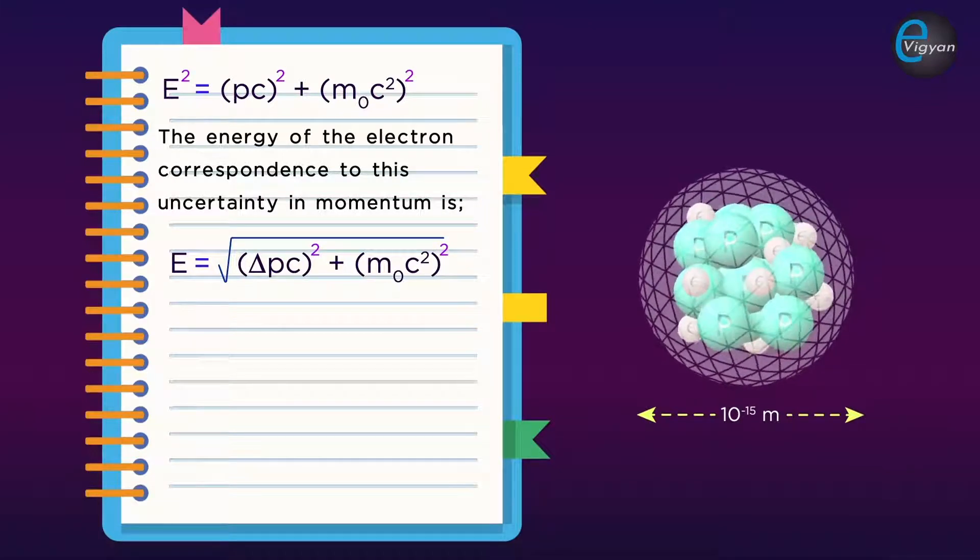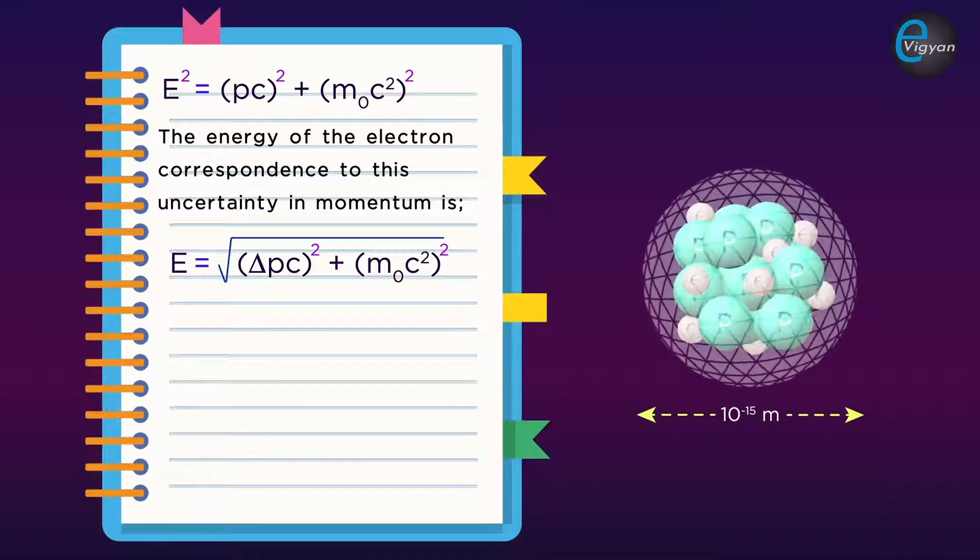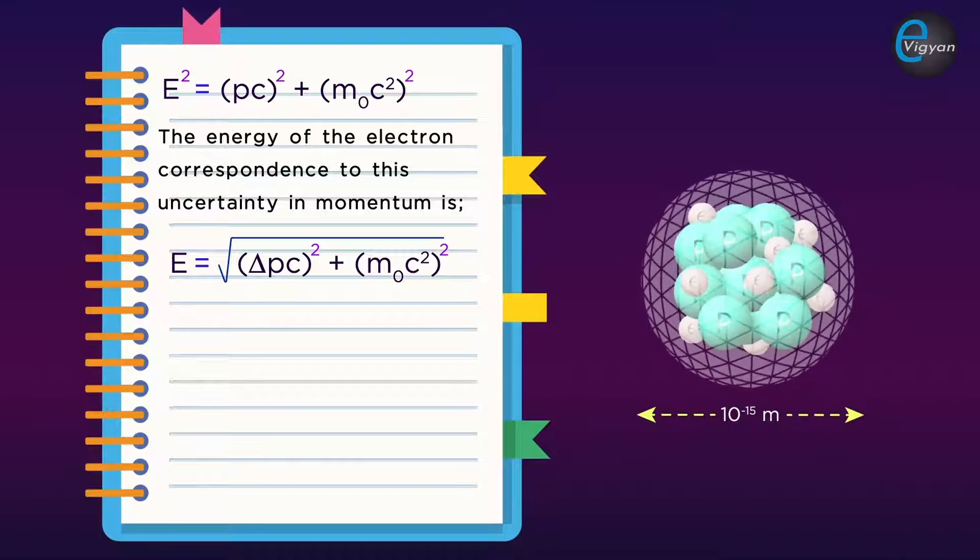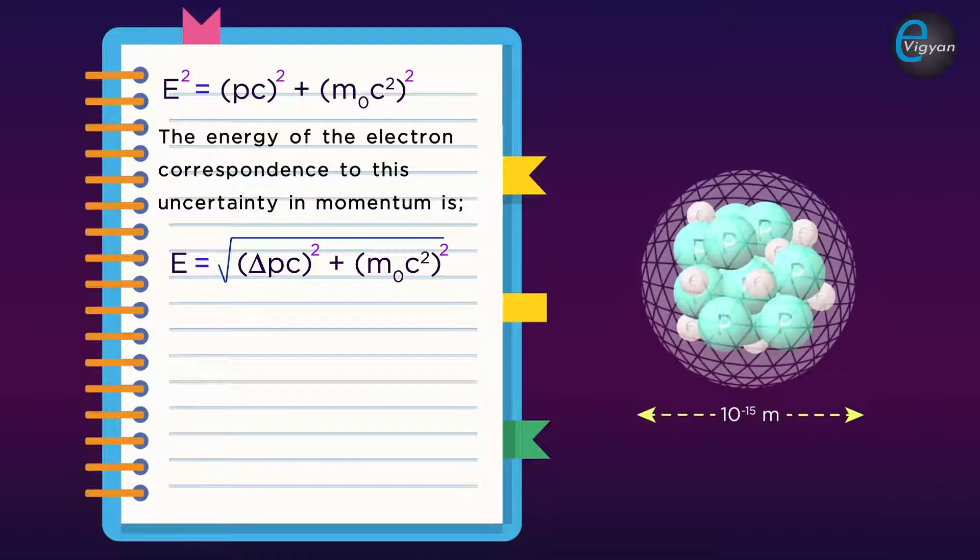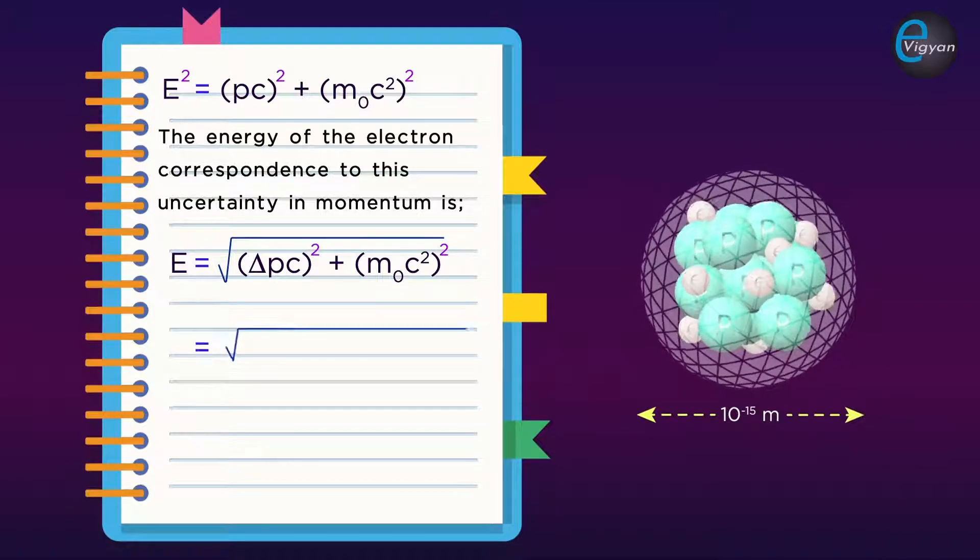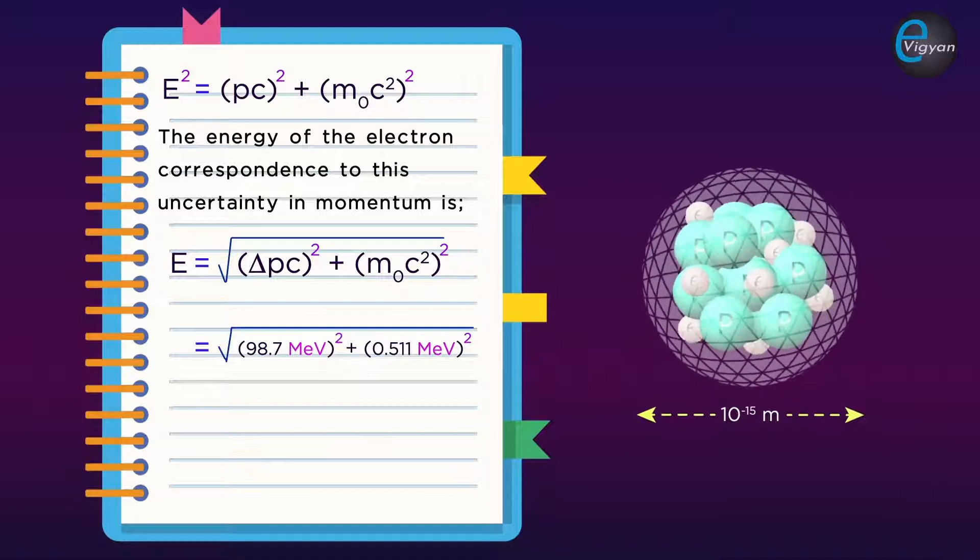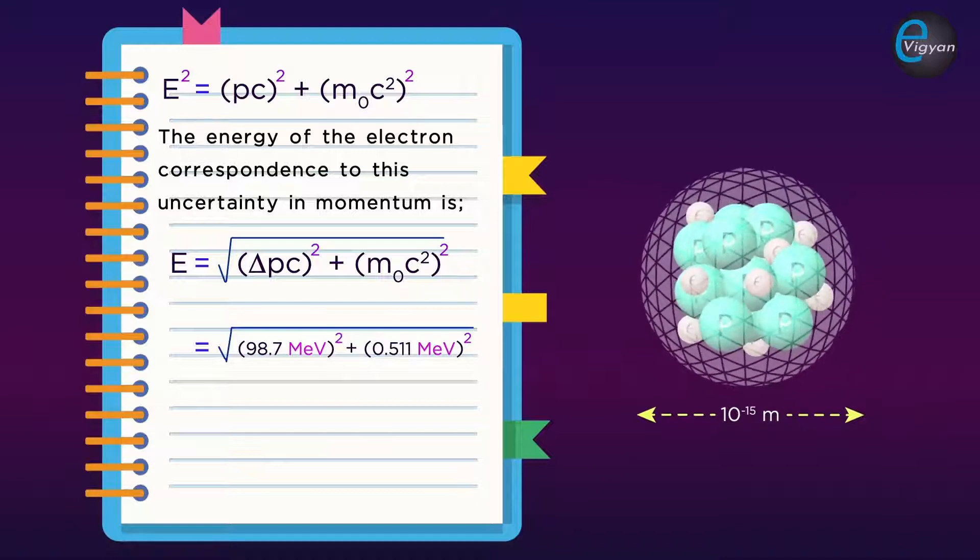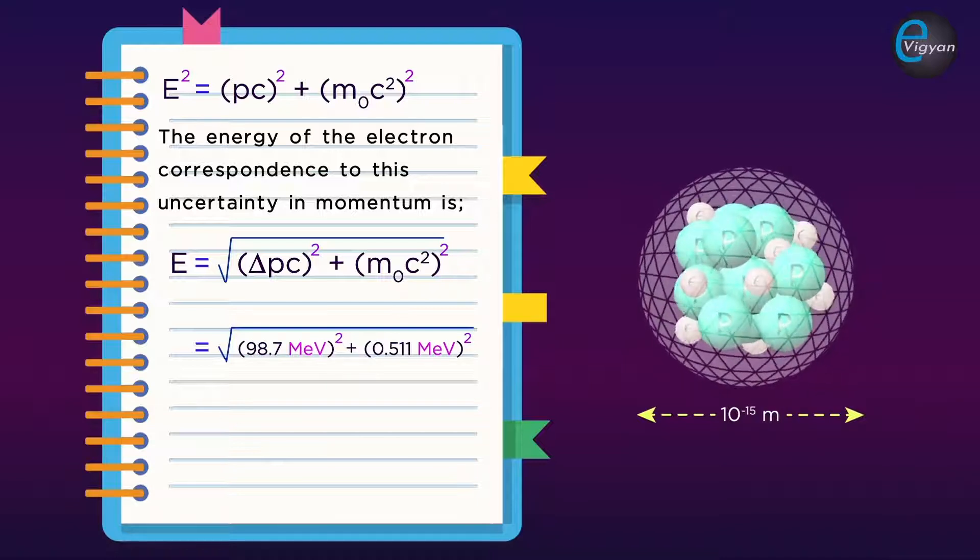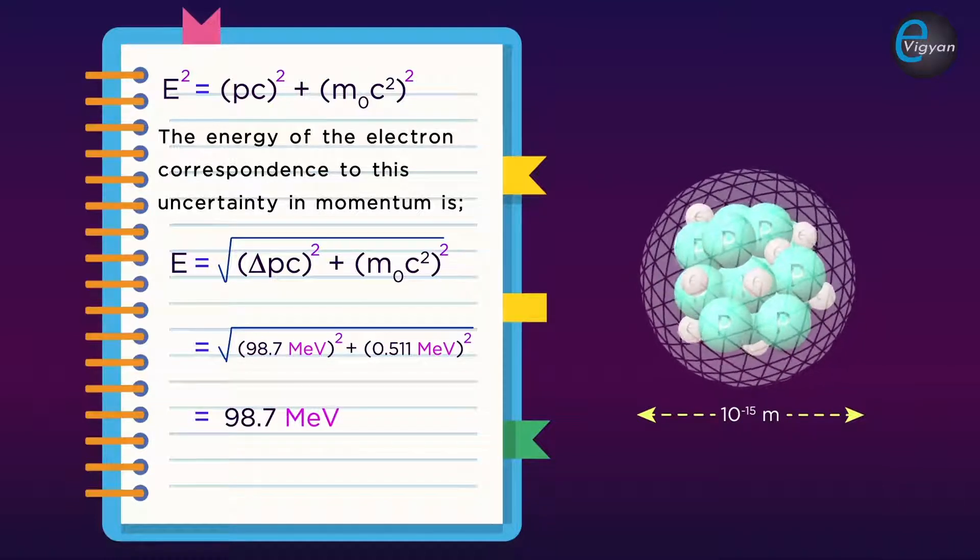Here m₀ is the rest mass of the electron, which is equal to 0.511 MeV/c². So, we can write E equal to √[(98.7 MeV)² + (0.511 MeV)²], which comes out to be 98.7 MeV.